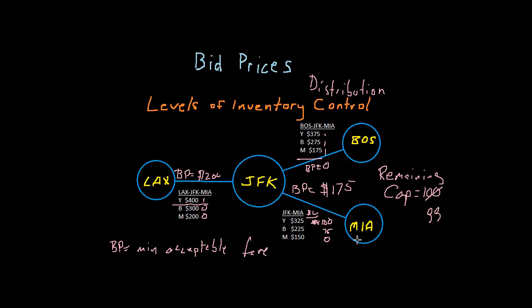The heuristic model only looked at one leg at a time when calculating the bid price. The problem with that is passengers flow across more than one leg in the network on itineraries. For example, a customer going from Boston to JFK to Miami, or from LA through JFK to Miami. When we make a decision on one leg without considering the impact to the network, we lose valuable information and may calculate an inaccurate or sub-optimal bid price. Network formulations attempt to consider all the impacts to the network while making decisions at the leg level.